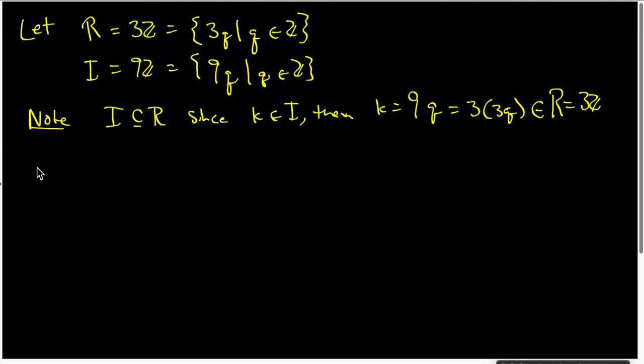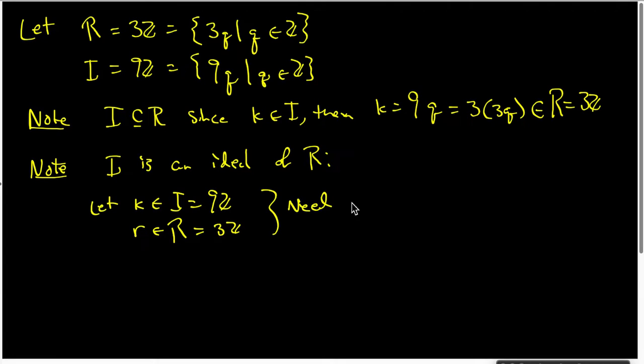The other thing is that I want to note that I is actually an ideal of R. And that's also easy. I let K be inside I, which is 9Z, and I let R be inside ring R, which is 3Z. And I need to show that R times K belongs to the ideal I.